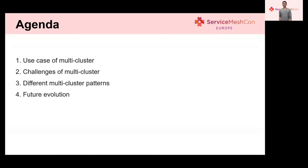Let's see today's agenda. There are four parts I will introduce today. The first part is use cases of multi-cluster — why we need multi-cluster. The second part is the challenges of multi-cluster. The third part is different multi-cluster patterns, which is the most important part of today's topic. The last part is the future evolution of multi-cluster in Istio.